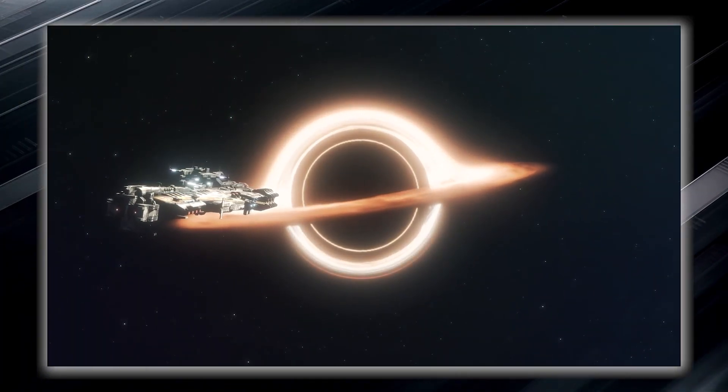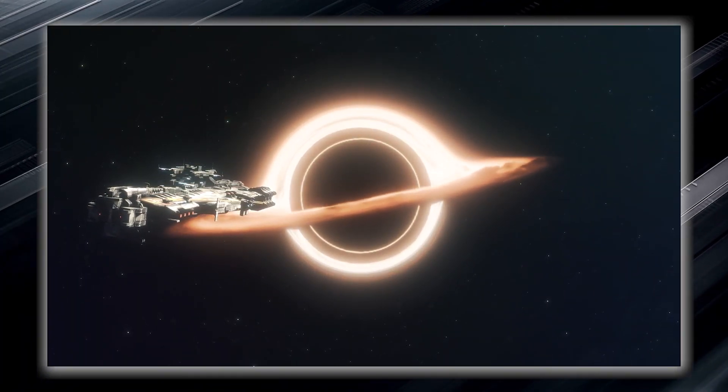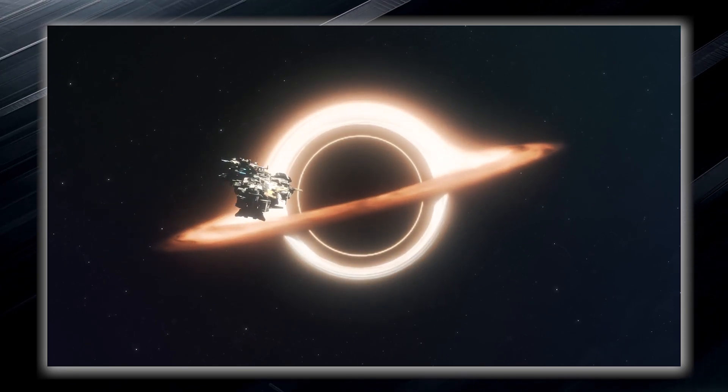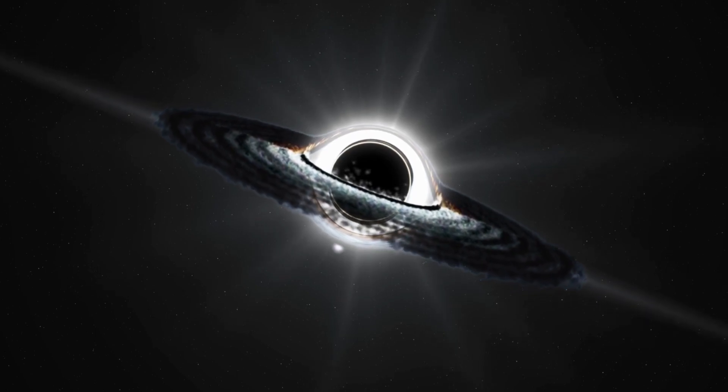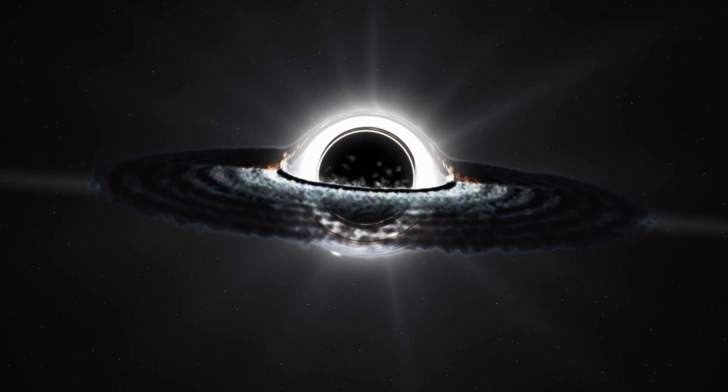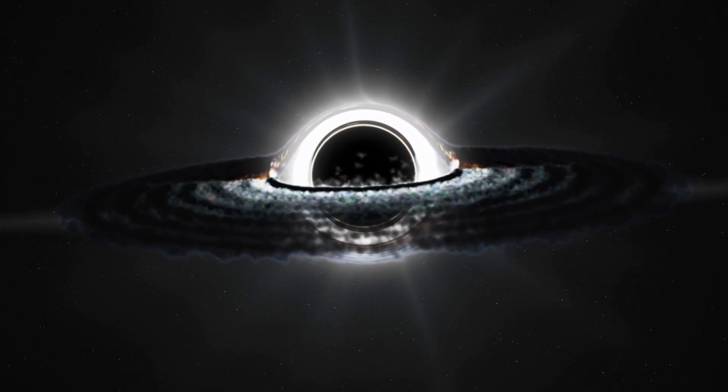Once something, such as an unfortunate spacecraft or even light, crosses its boundary, it can never escape the clutches of the black hole. The event horizon forms an invisible force field that holds everything within it, including light, which is normally considered the fastest entity in the universe.